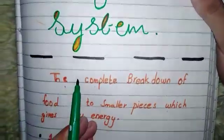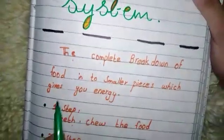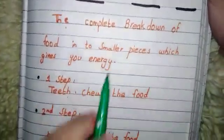An exact definition of digestive system is the complete breakdown of food into smaller pieces which gives you energy. This is called digestive system.